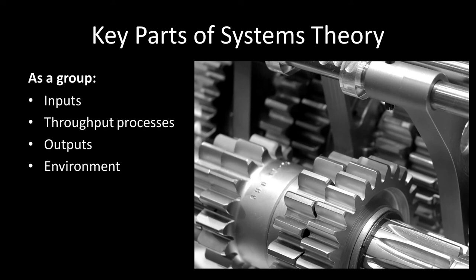Just a quick review. Inputs are the things that we start out with. Throughput processes is the actual work of the group. Outputs are the things that the group creates. They can be physical, such as creating a presentation, or they can be less physical, such as the feeling of excellence. And ultimately, all of these things are affected by the environment in which they are taking place.